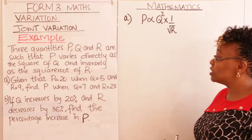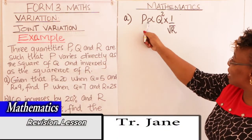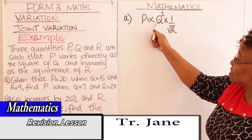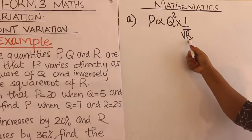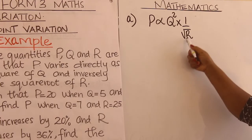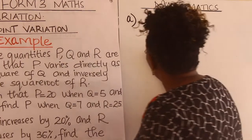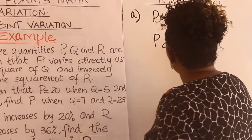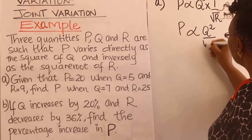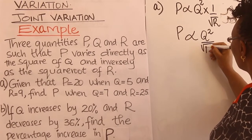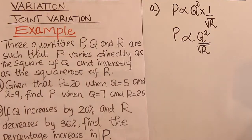Learn that — it is very important. P varies directly as Q squared and inversely as 1 over the square root of R. Therefore, you multiply this side and get Q squared over square root of R.